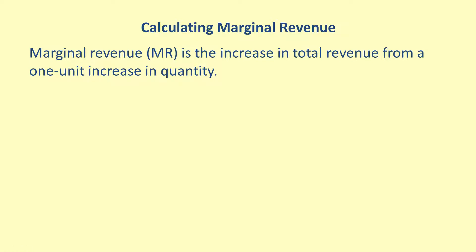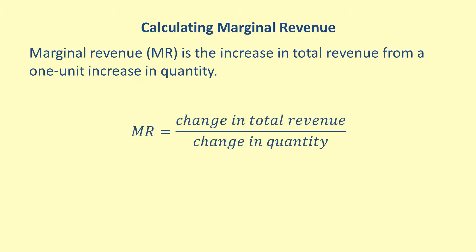In this video, we will discuss how to calculate marginal revenue. Marginal revenue, or MR, is the increase in total revenue from a one unit increase in quantity. The formula for marginal revenue is the change in total revenue divided by the change in quantity.